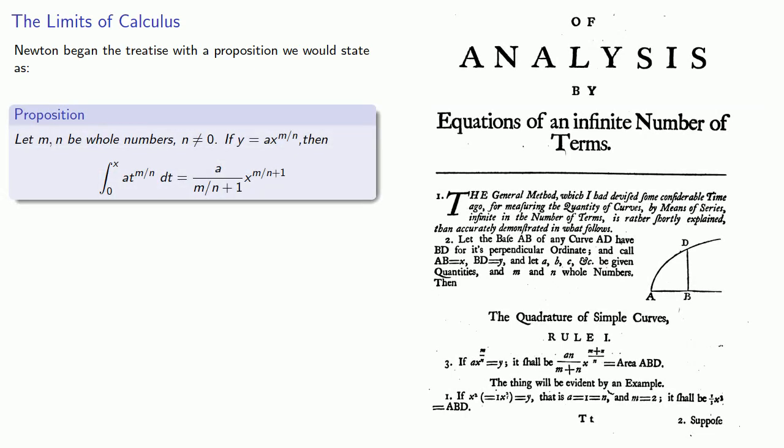Newton began the treatise with a proposition we would state as the following. Let m and n be whole numbers with n not equal to zero. If y equals ax to power m over n, then the integral from zero to x of a t to the m over n dt is pretty much what we'd expect. And while Newton introduces this rule at the beginning and immediately launches into a bunch of examples, he does eventually prove it at the end using a non-rigorous limit argument.